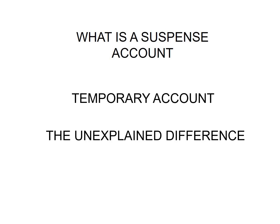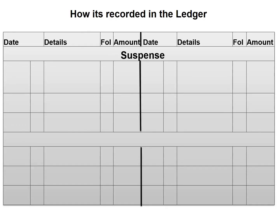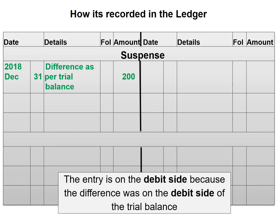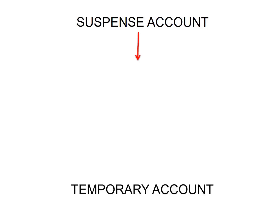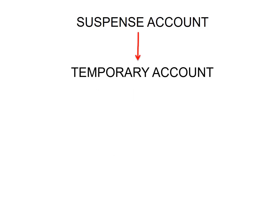Let's have a look at how we will record this in the ledger. Since we needed to debit our suspense account, we will also debit our suspense account in the ledger. The entry is on the debit side because the difference was on the debit side of the trial balance — the trial balance had $200 less on the debit side, and that's why we posted the $200 difference on the debit side in our ledger. Since the suspense account is only a temporary account, it is not a permanent account.